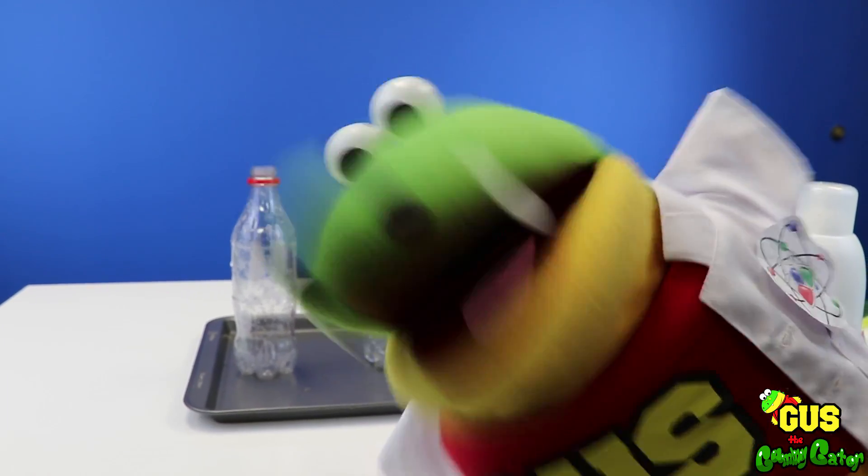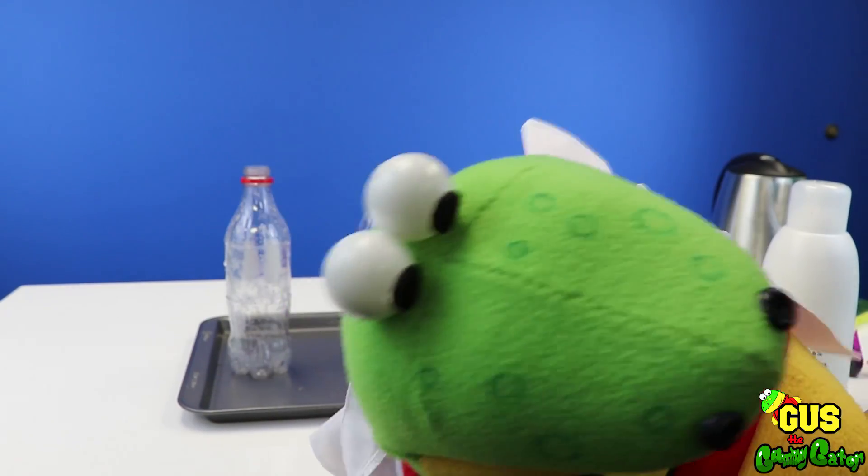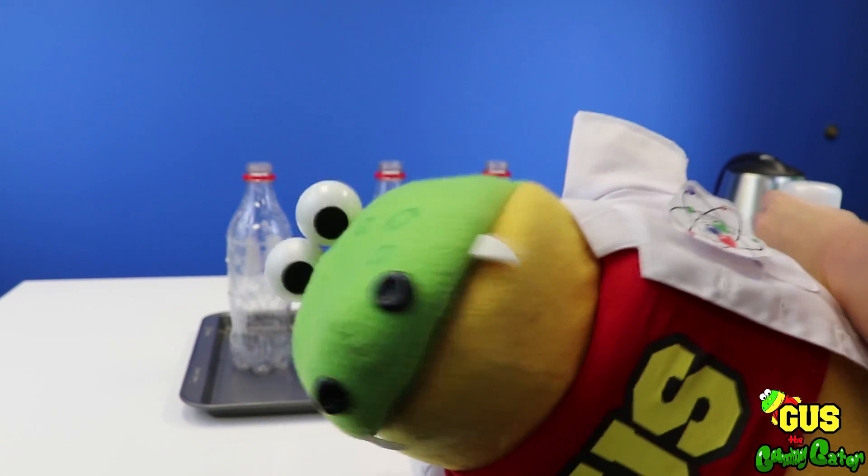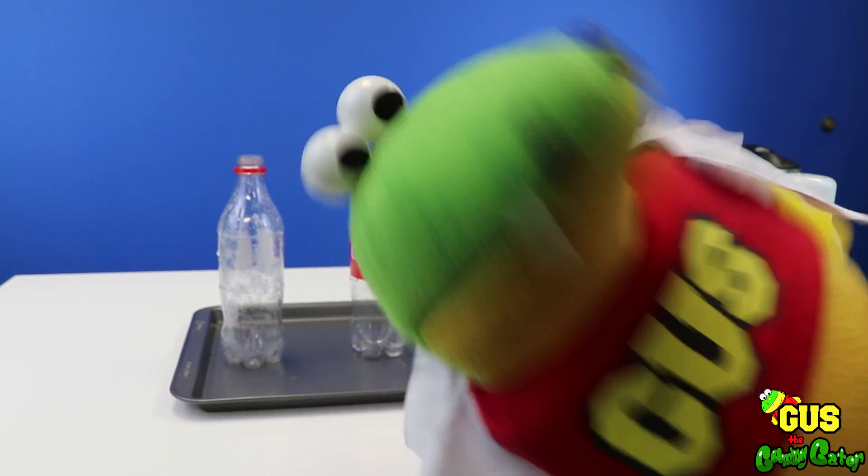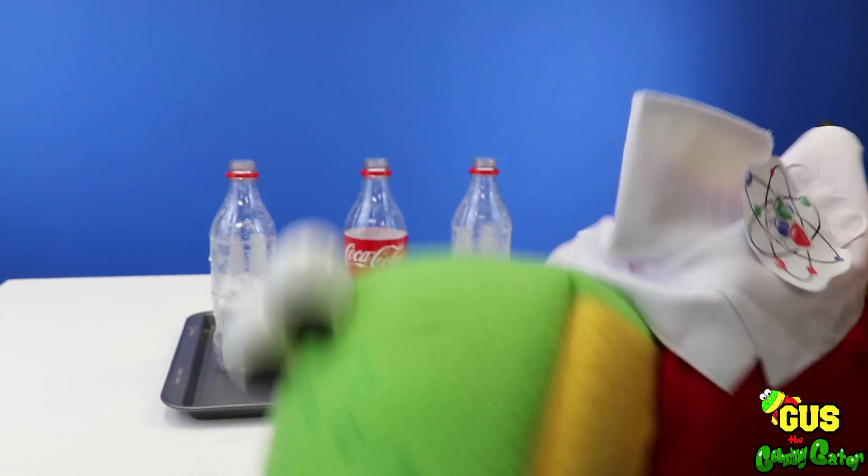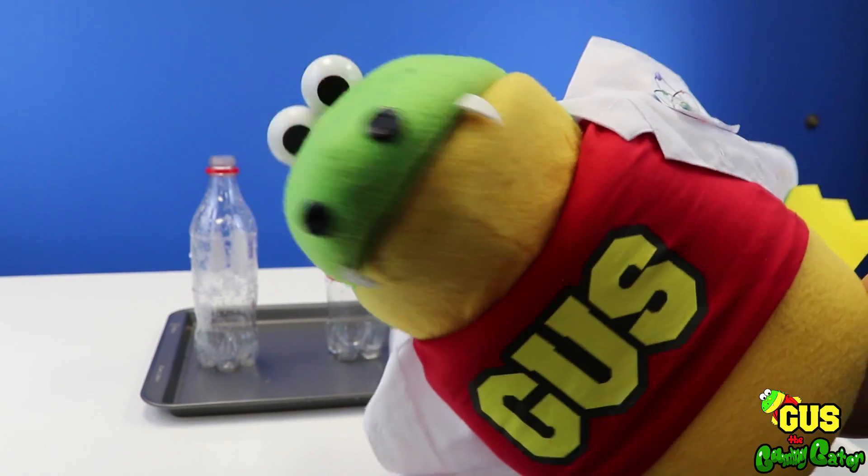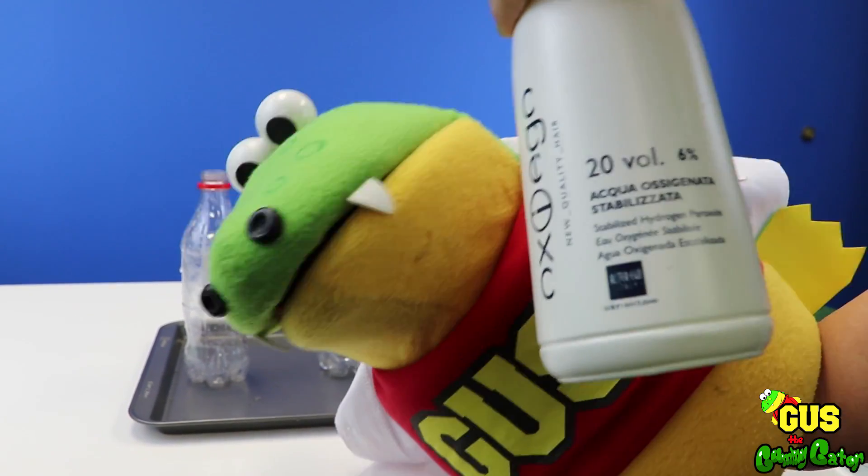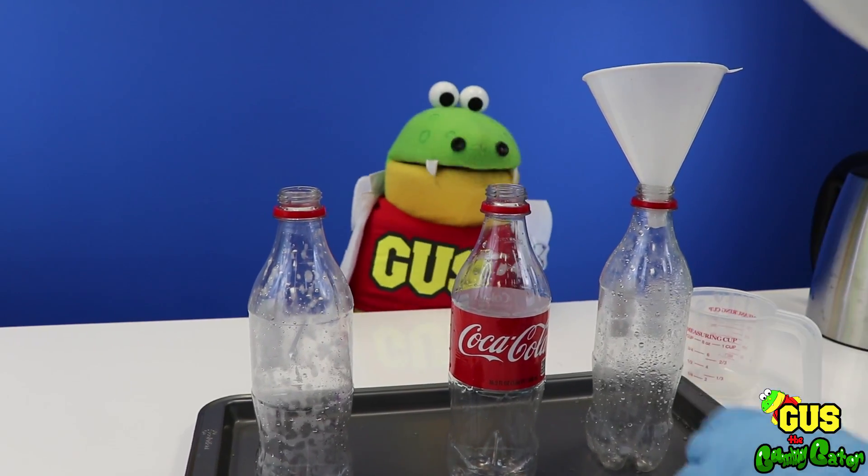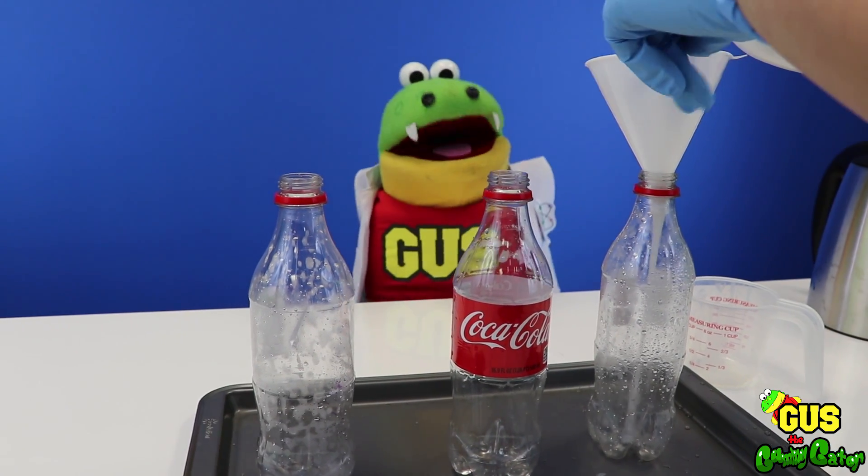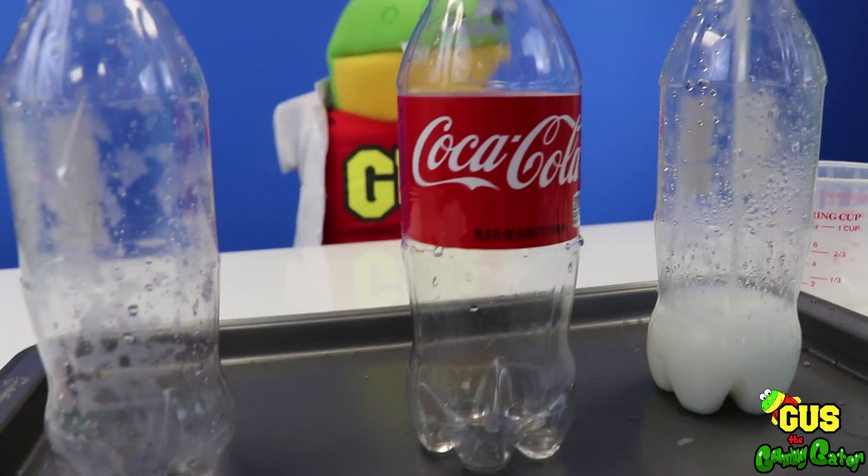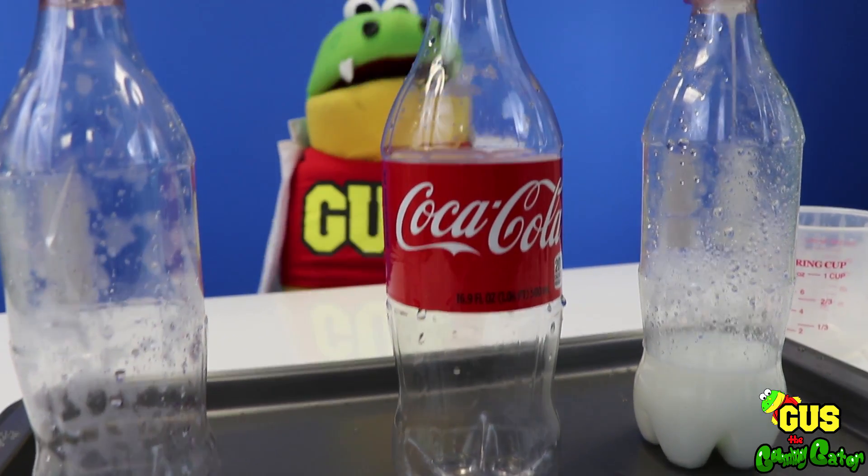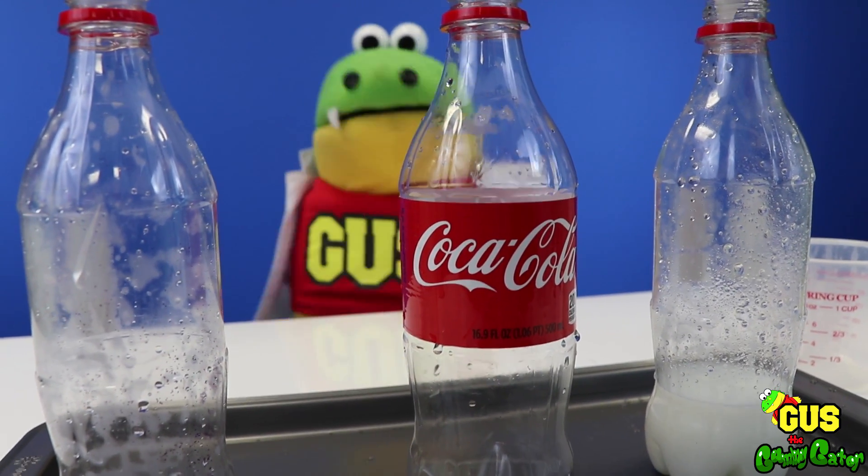All right! Next we're going to make Elephant Toothpaste! We're going to need an adult's help! Sarah! I'm here Gus! Come help me! We need some hydrogen peroxide! Like this stuff! Now we're going to add the peroxide! Be careful! Make sure you have an adult helping! It's nice and gooey! Do that three times!